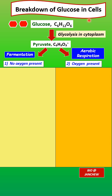How is glucose broken down in cells to produce energy for cellular activities? There are a few pathways or methods. Starting with the glucose in the cells — C6H12O6 — through the process of glycolysis, which is the breakdown of glucose in the cytoplasm. Pyruvate molecules are formed; pyruvate has three carbon atoms each. We do not need to memorize this formula.